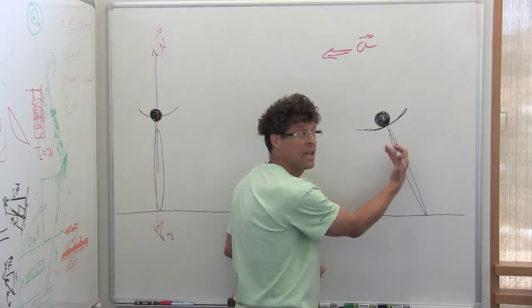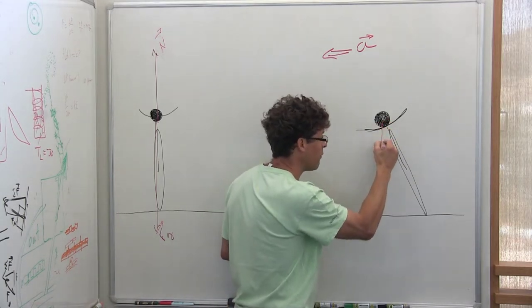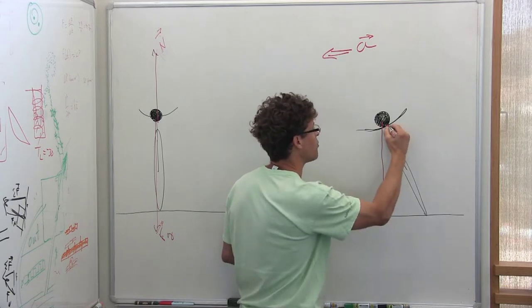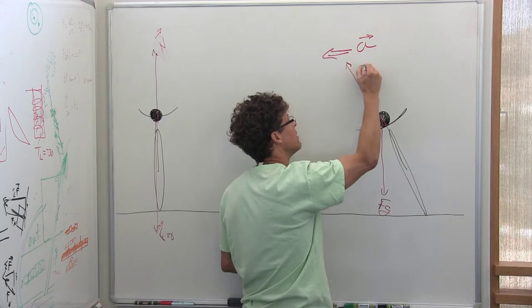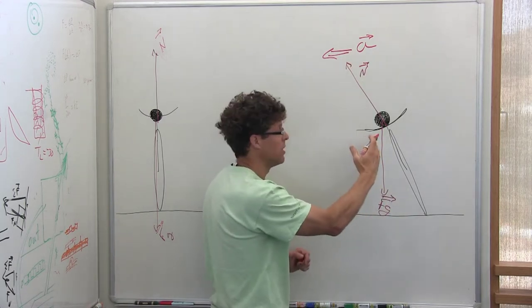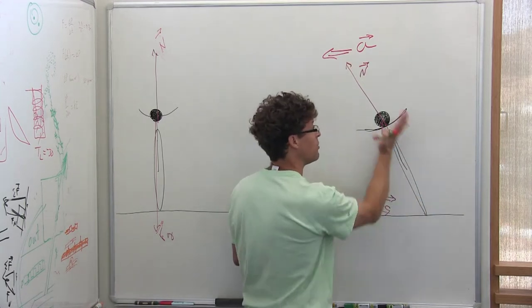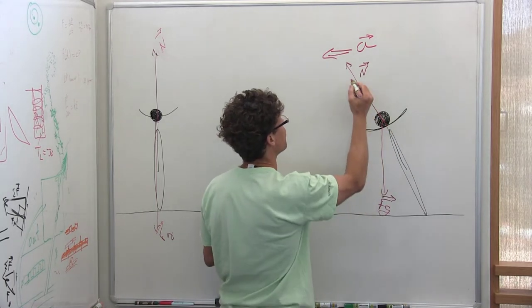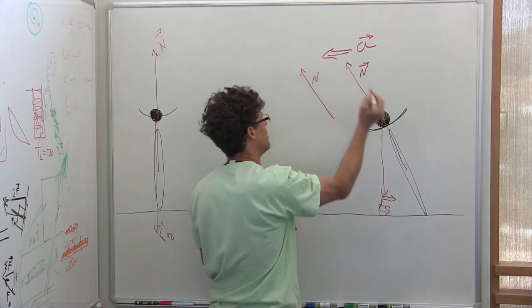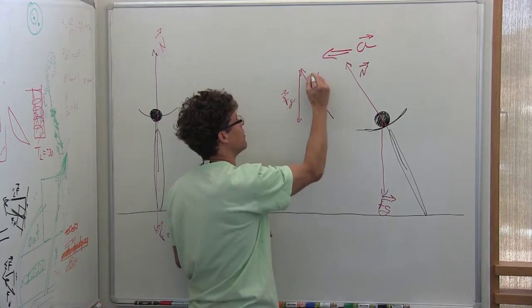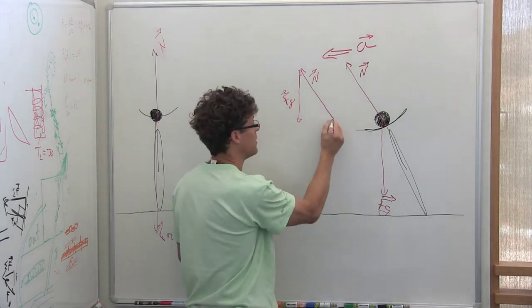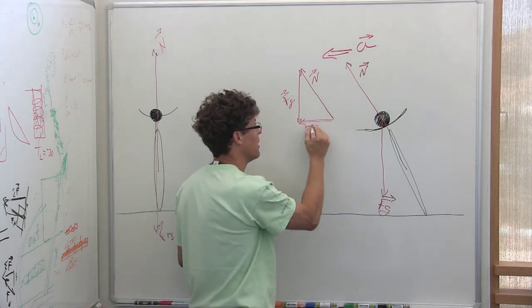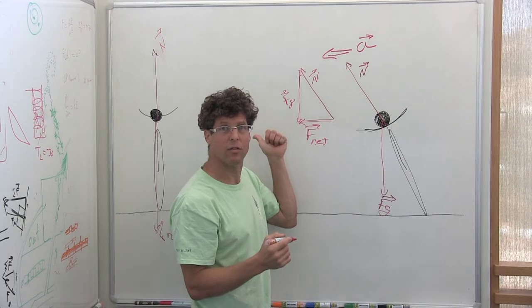And so if I lean into the turn, now the force of gravity is still straight down, but the normal force pushing on my body is at an angle because this post can only provide compressional force. And so when we add these two forces, the normal force plus the force of gravity results in a net force that accelerates me in this direction.